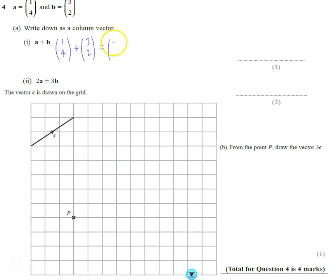So across the top you get 1 plus 3 which is 4, and across the bottom you get 4 plus 2 which is 6. So our answer is (4, 6).